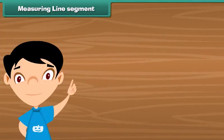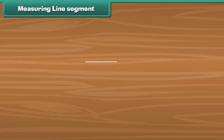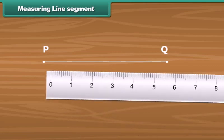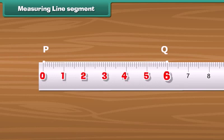Let us measure a line segment with the help of a centimeter scale. Draw a line segment with its end points as P and Q. Place the zero end of the scale exactly below point P. See where point Q lies on the scale — Q lies on number six. Between the numbers zero and six there are six centimeters, so the length of line segment PQ is six centimeters.